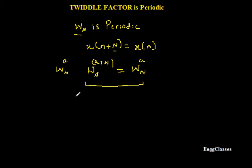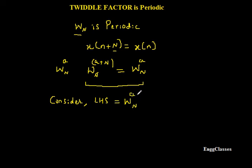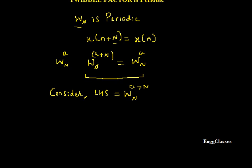To prove this, consider the LHS: Wn to the power (a + N). We need to show it equals Wn to the power a. Substituting the definition of Wn, which equals e to the power (minus j 2π divided by N), the LHS becomes e to the power (minus j 2π over N) times (a + N).